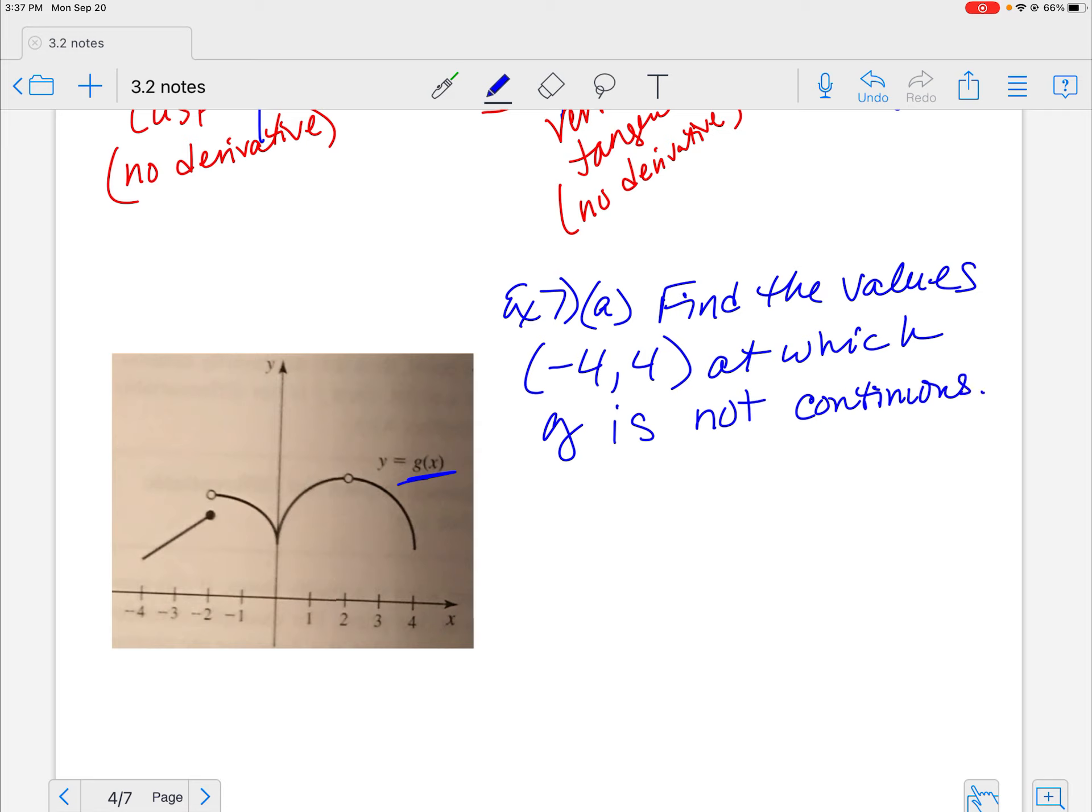So where is it not continuous? Yeah, right here because it jumps, right? And where else? Yes, because it's a hole. Remember, hole is not continuous. So at X is equal to negative two and positive two, my graph is not continuous.